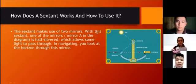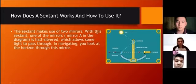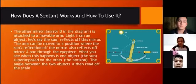I will discuss how a sextant works and how to use it. In this diagram, the sextant makes use of two mirrors. With the sextant, one of the mirrors, mirror A in the diagram, is half silvered, which allows some light to pass through. In navigating, you look at the horizon through this mirror. These are the two mirrors used to get the light coming from the sun that reflects.